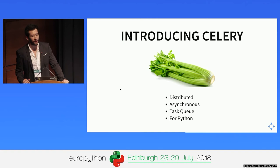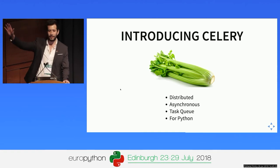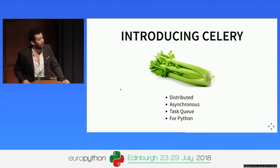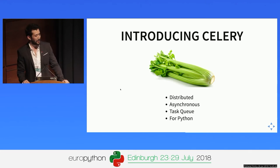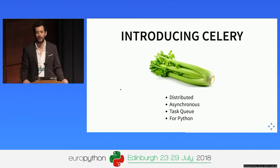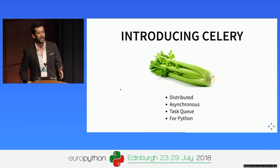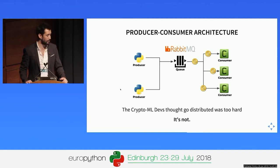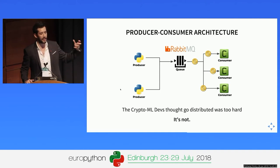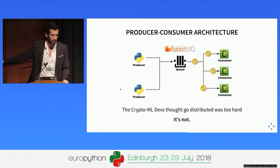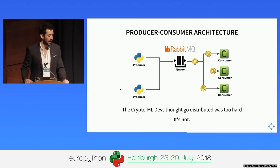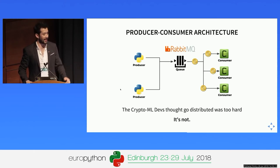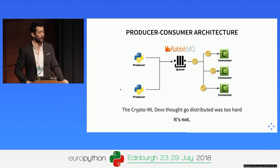This is where we introduce Celery. Who here has heard about Celery? Celery is basically a distributed asynchronous task queue for Python. It's beautifully simple to use and to get started on a non-Cellerized project. It uses a producer-consumer architecture: you have producers that say 'this task needs to be done,' and then workers and consumers continuously listening — in this case to a RabbitMQ queue — that take the task and execute it. The CryptoML devs thought it was really hard, but it's actually not that hard to get started.